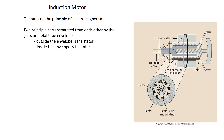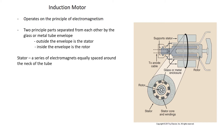There are two principal parts separated from each other by either glass or metal tube envelopes. The outside of the envelope has the stator, and the inside is the rotor. These two parts, the stator and rotor, do not physically touch one another. The stator is a series of electromagnets equally spaced around the neck of the tube. The rotor is a shaft made of bars of copper and soft iron.